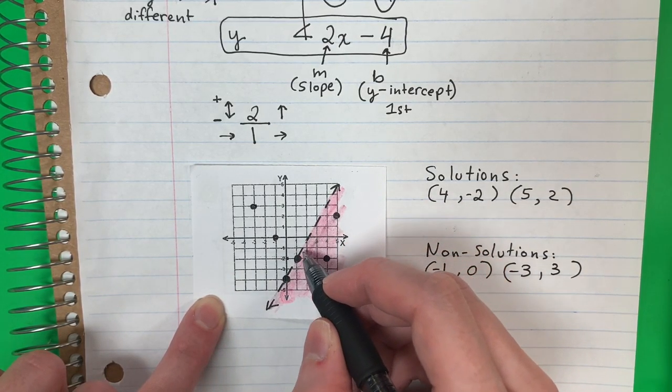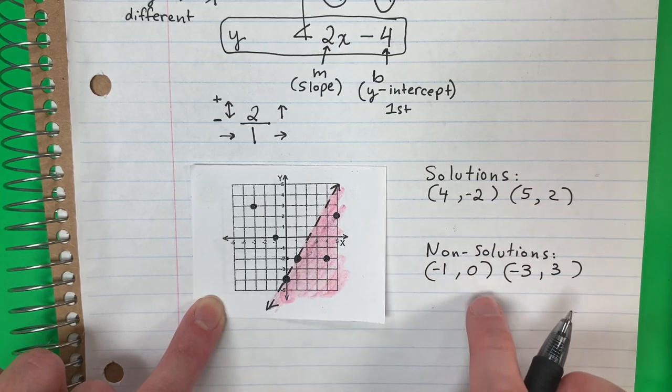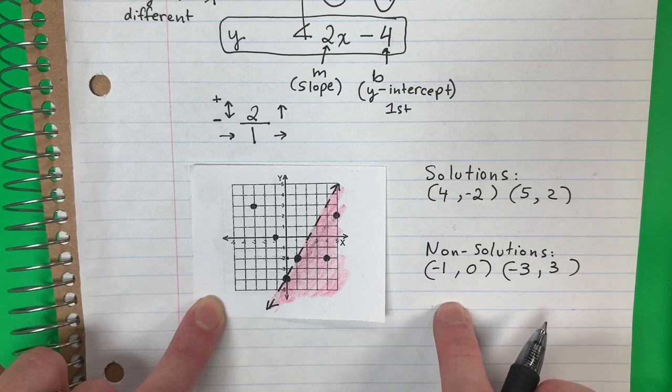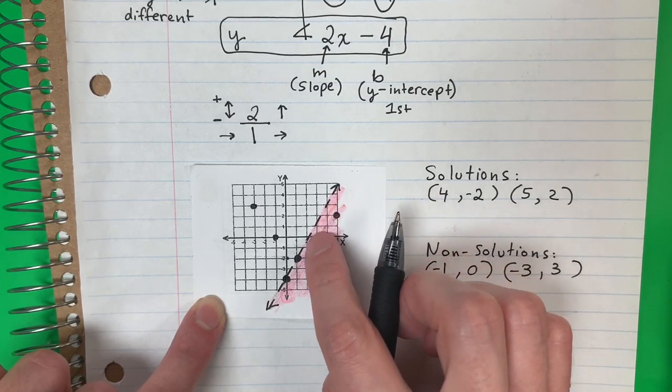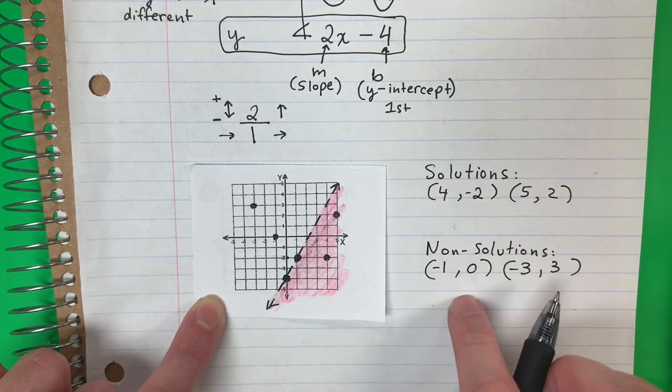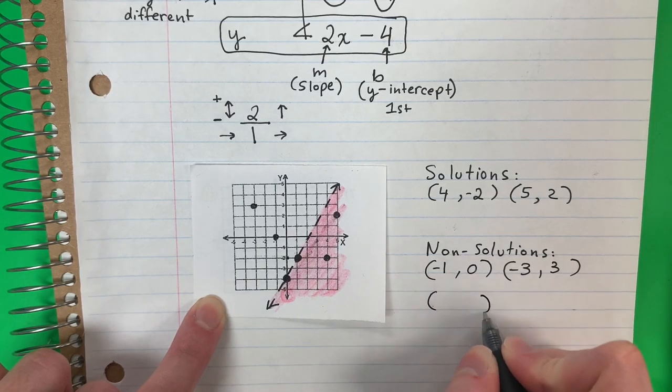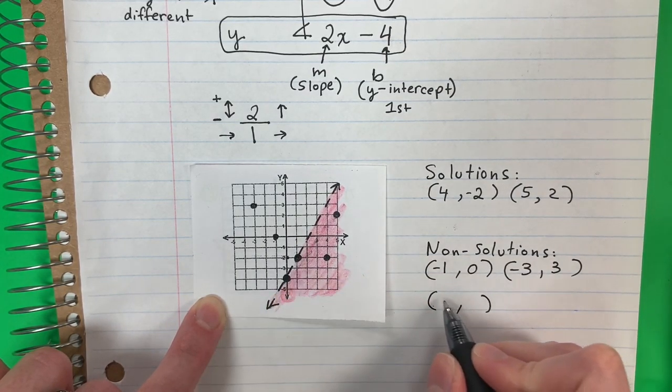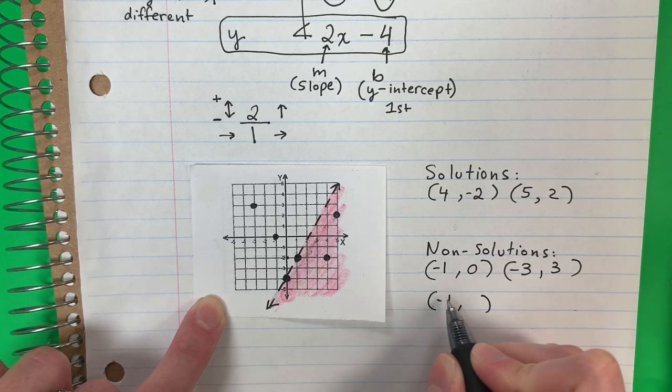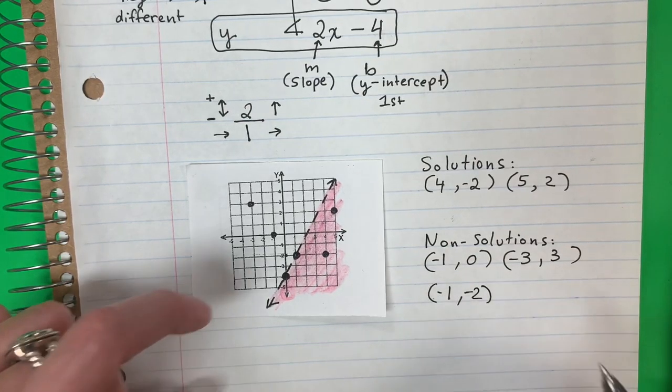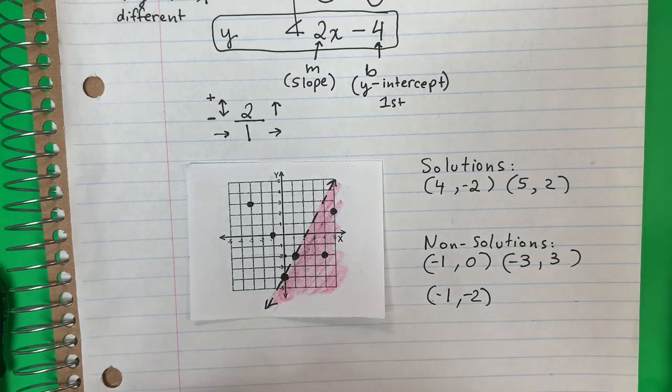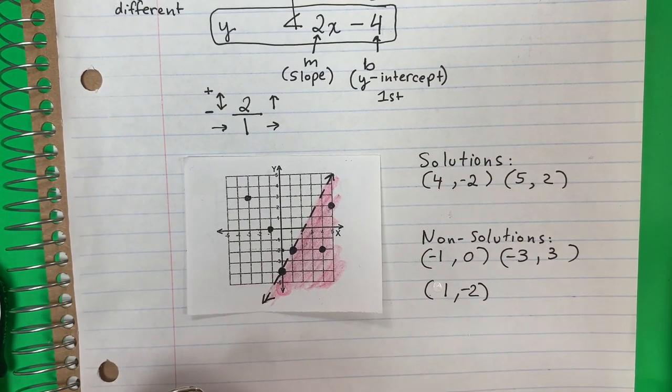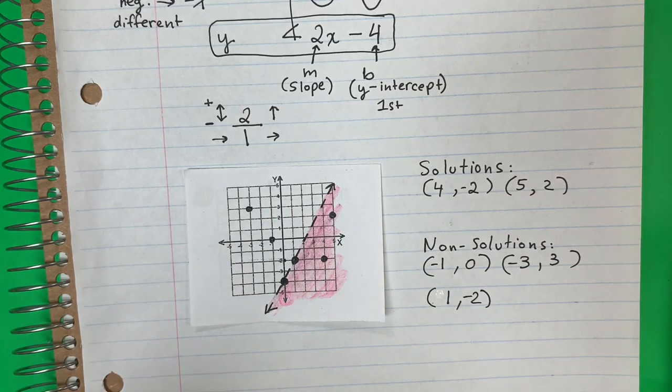If it's dashed, si es una línea dashed, it is non-solution. So a point on a dashed line is a non-solution. Un punto sobre una línea dashed is a non-solution. So I'm going to put here, here's a point, 1, negative 2. Sorry. 1, negative 2. This is positive 1. Es positivo 1.